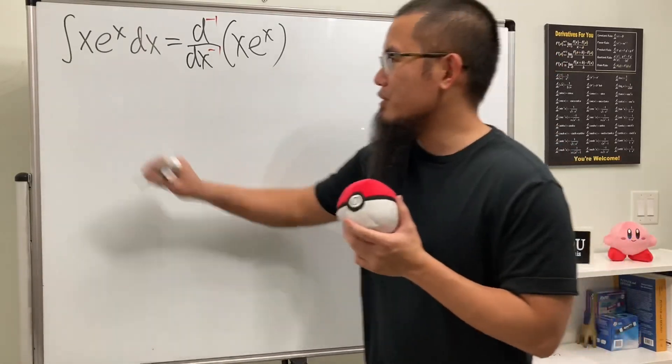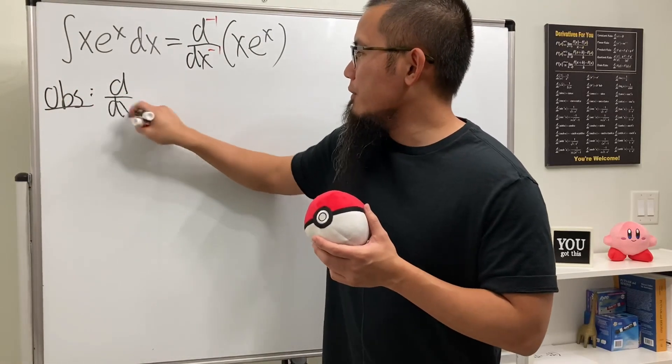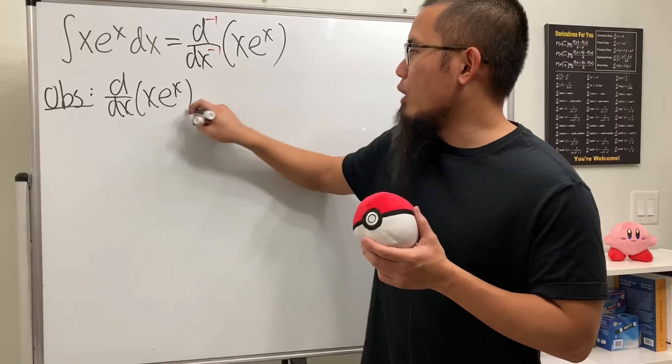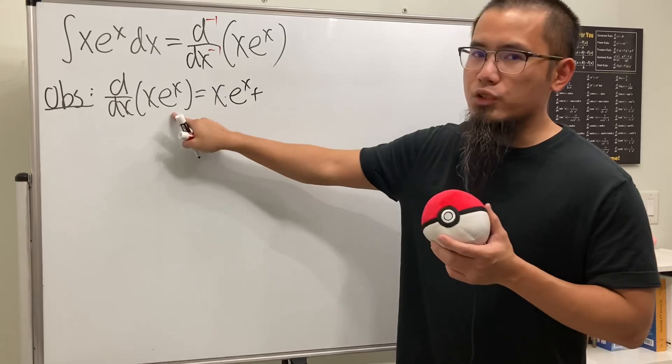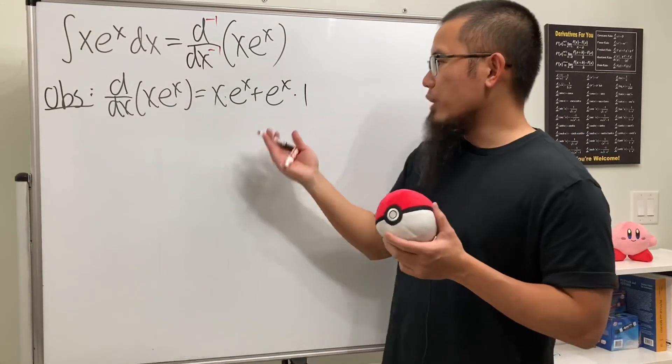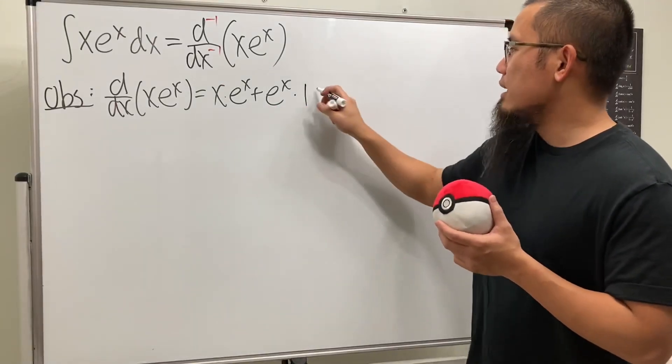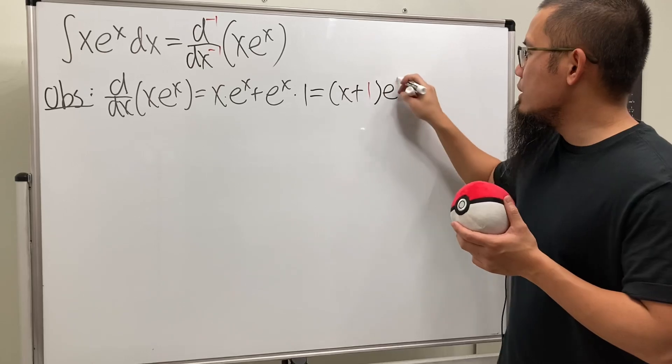So let's make some observations. If we do the first derivative, well, we will have to use the product rule, so keep the first function times the derivative of the second, and we add the second function times the derivative of the first, which we get 1. And of course, we can just factor out e^x, and that reads as (x+1) times e^x.